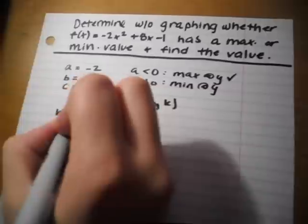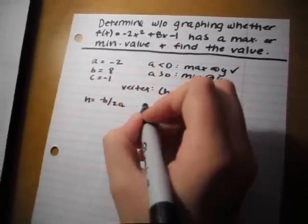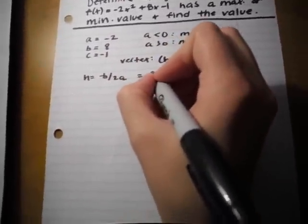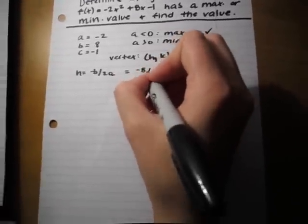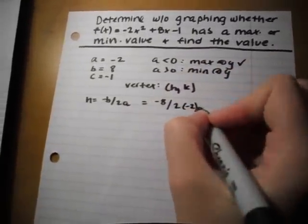h = -b/2a, which equals -8 / 2(-2), which equals 2.